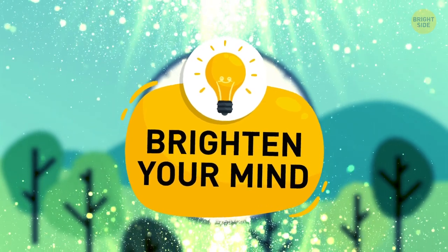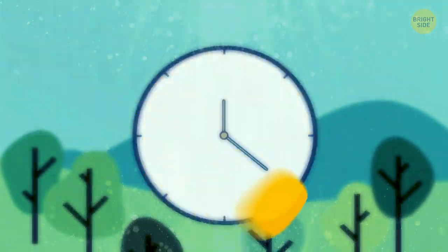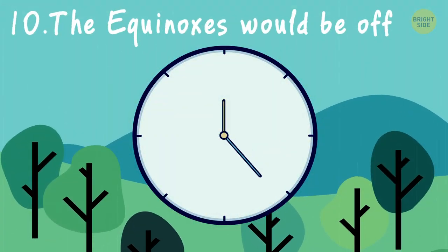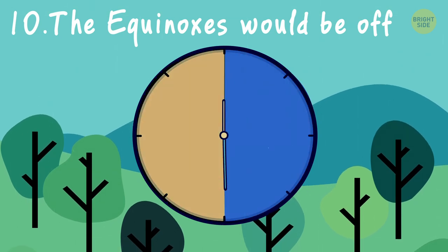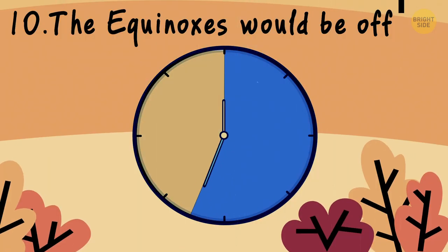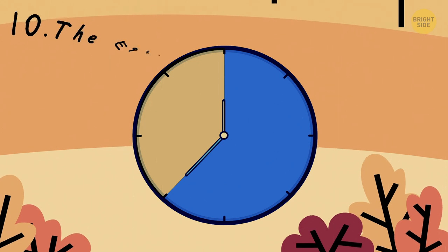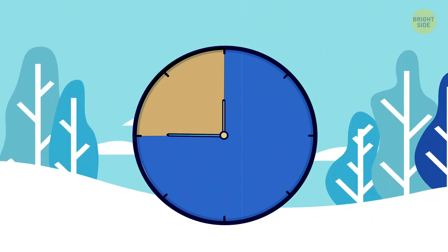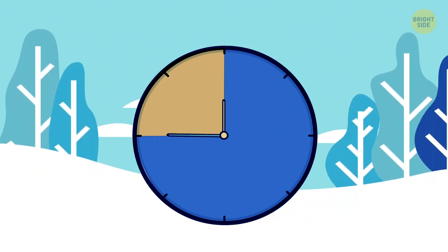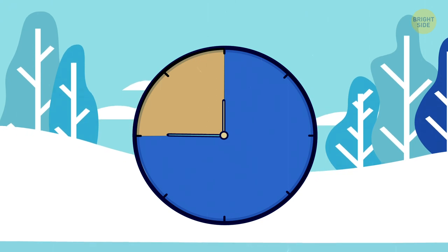Hey, what do you think? Would you miss the changes that the seasons bring? Ten: The equinoxes would be off. The equinoxes signal a change in seasons. For us Earthlings, equinoxes essentially mean a change in light, as days get longer and shorter during the change of seasons.